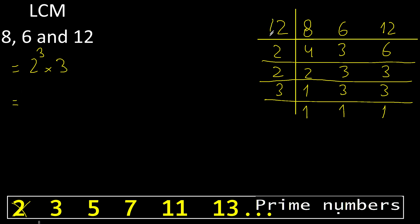Multiply by 2. Multiply by 2 is 4. Multiply by 2 is 8. Multiply by 3 is 24.